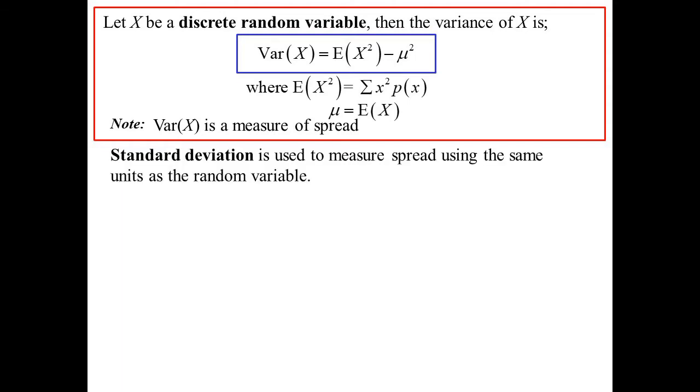The thing with variance, because we're squaring the X and we're squaring the average, whatever units our data is measured in, variance would be measured in units squared. It's probably more useful to have it the same units. So therefore we have this thing called standard deviation. We simply square root the variance, and that brings the units back to units rather than units squared.